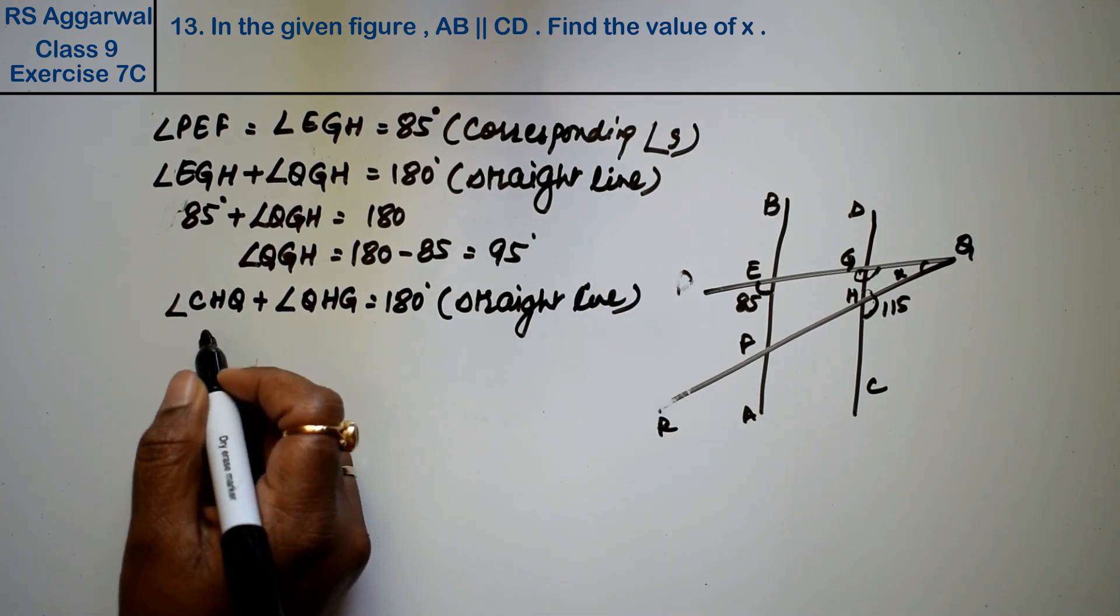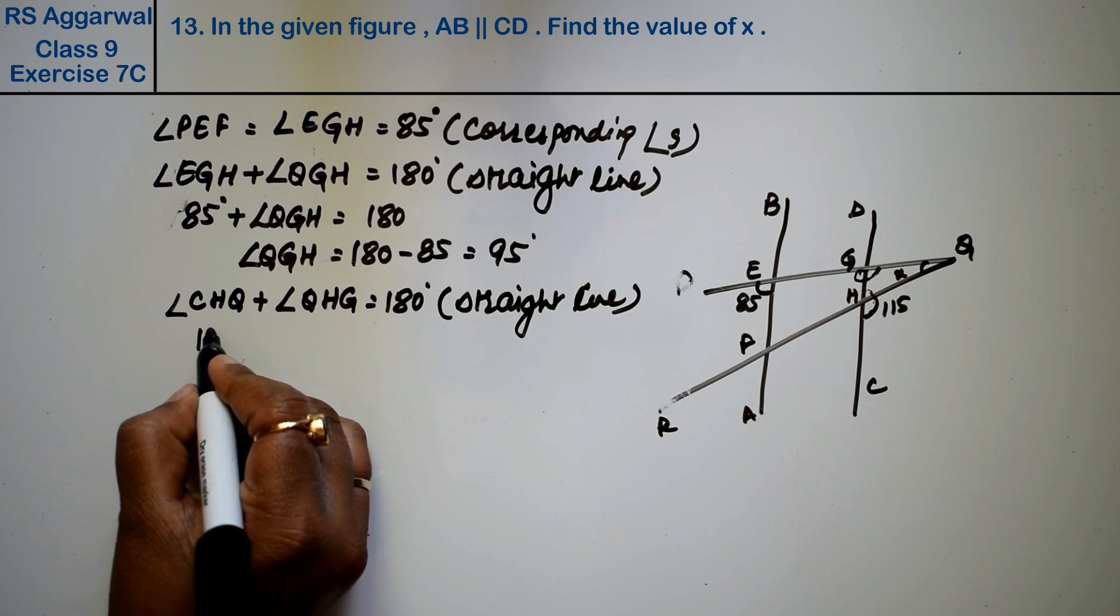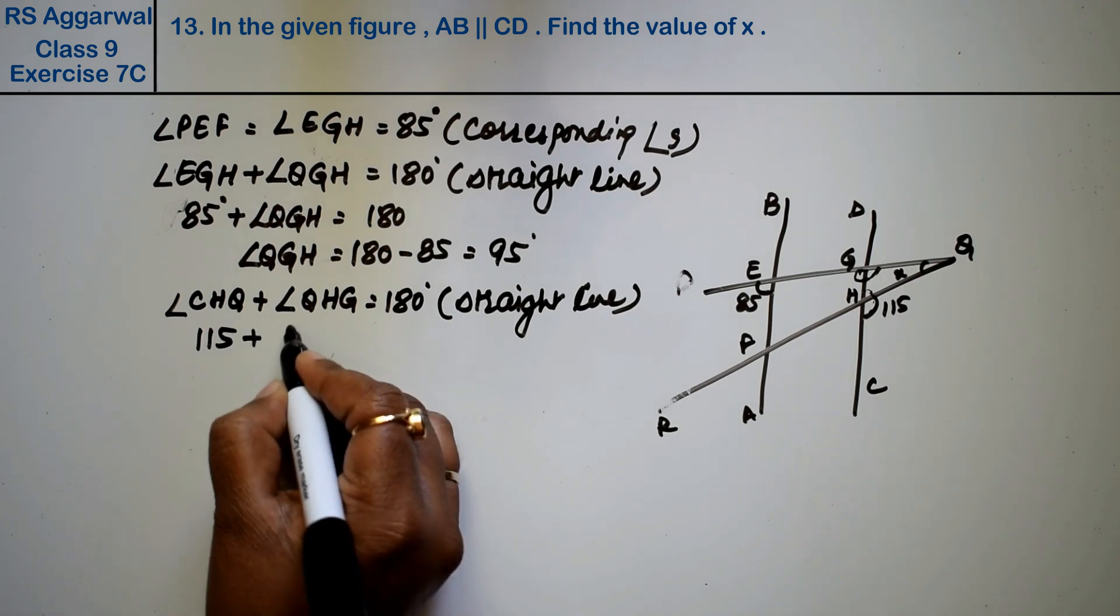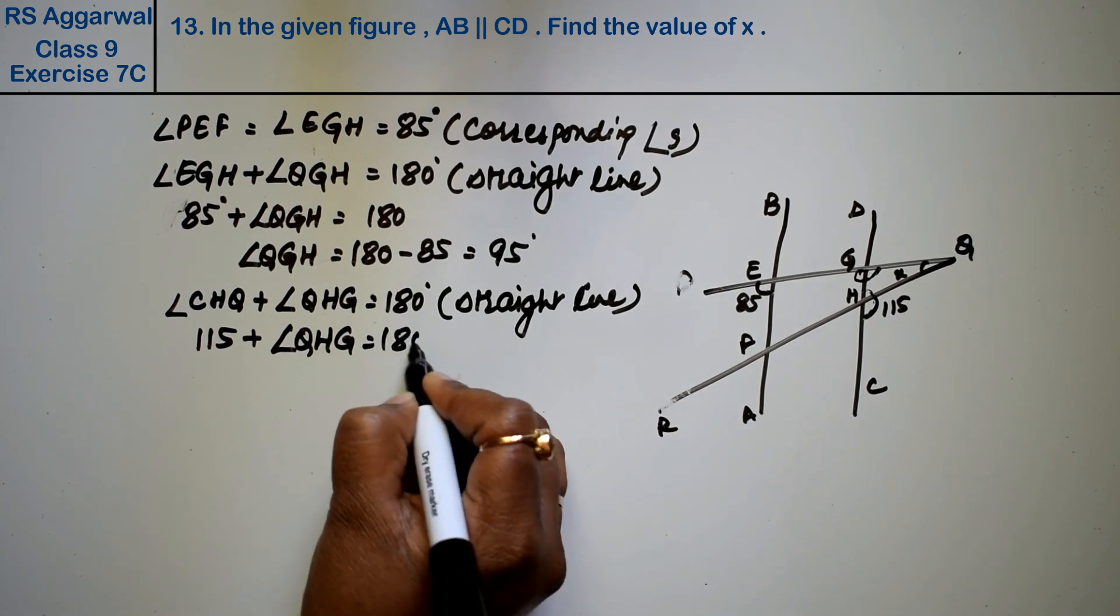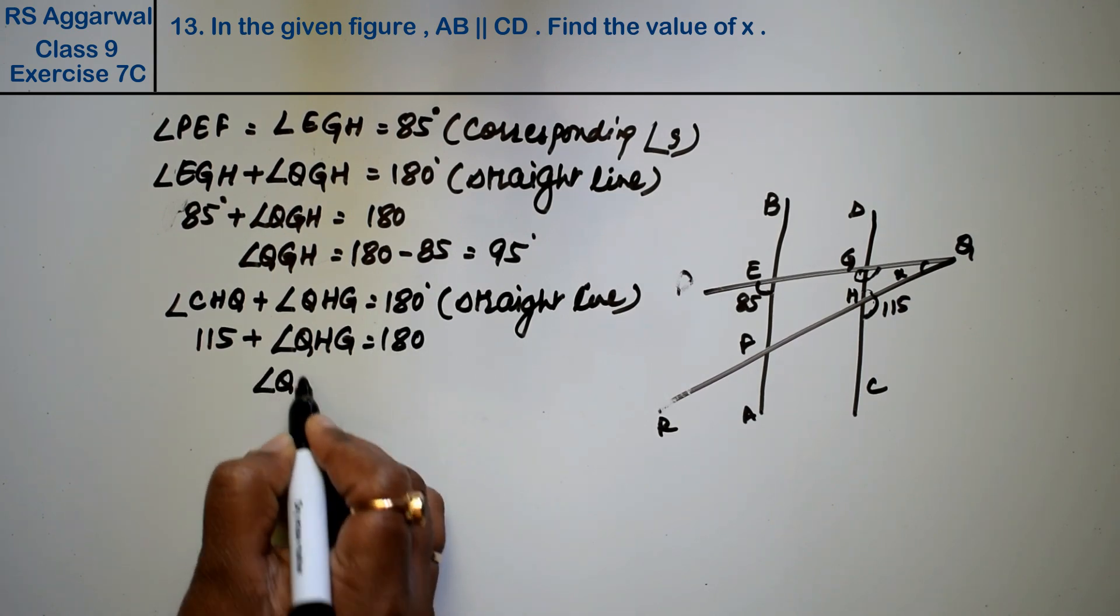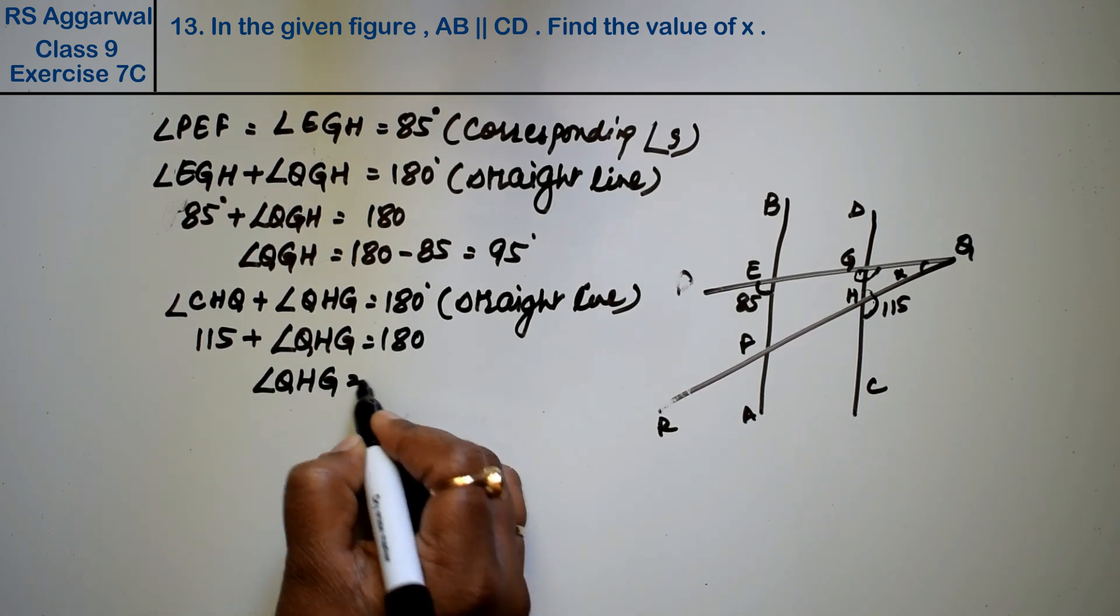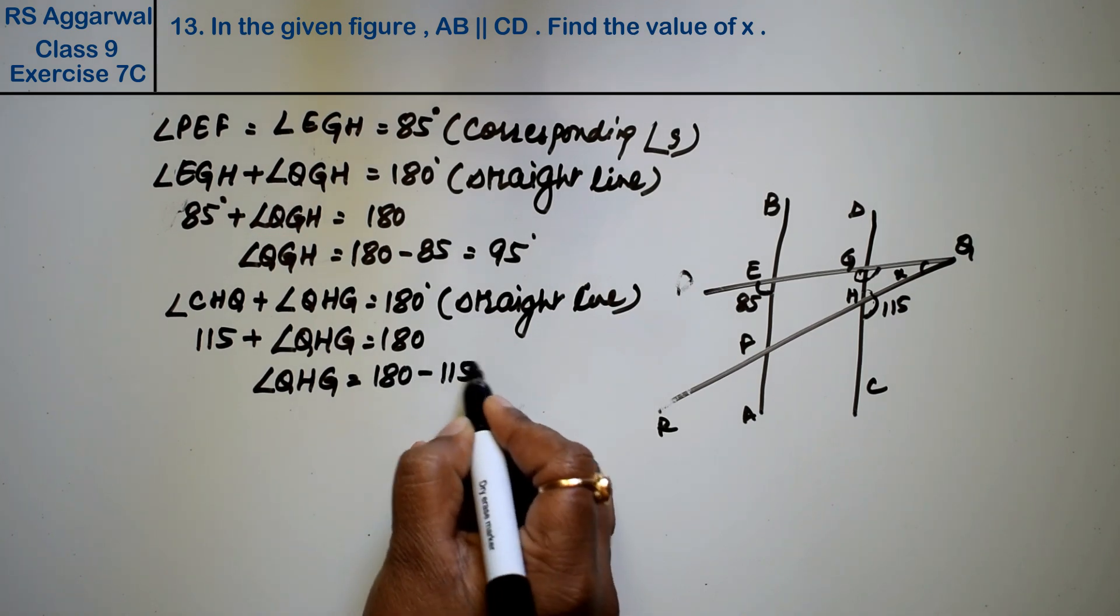So CHQ is 115. This is a straight line. We need to use this line equals 180. So QHG is how much? 180 minus 115.